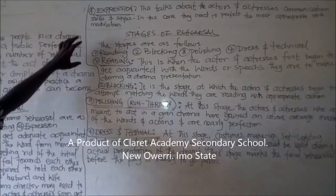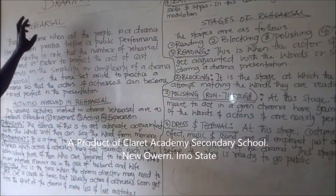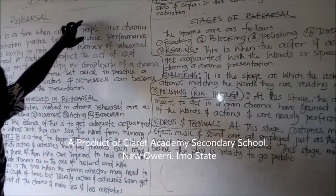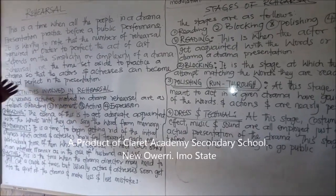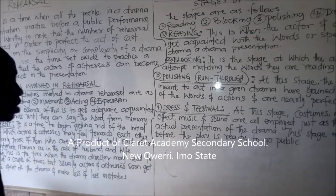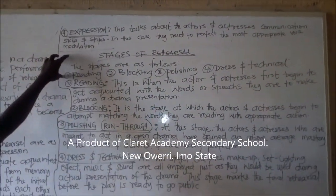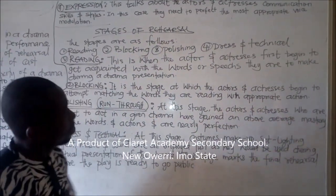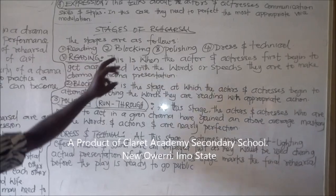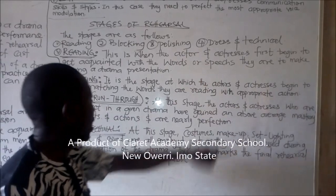We have made mention of the processes of rehearsal, the definition of rehearsal, and the activities involved — which are reading, movement, acting, and expression. Now the last stage: the stages of rehearsal. Number one is reading; number two is blocking; number three is polishing; and number four is dress and technical.